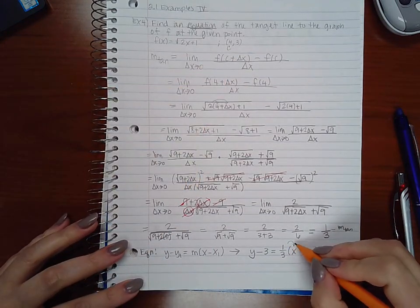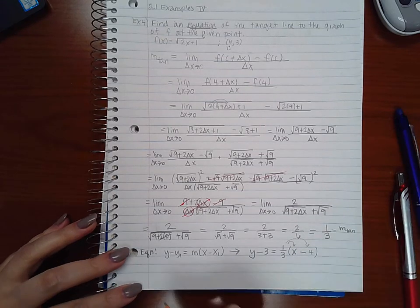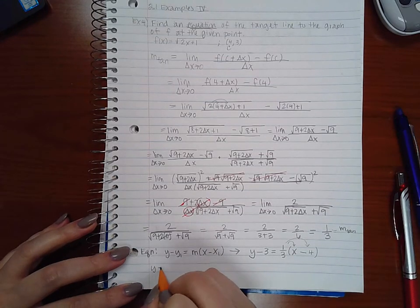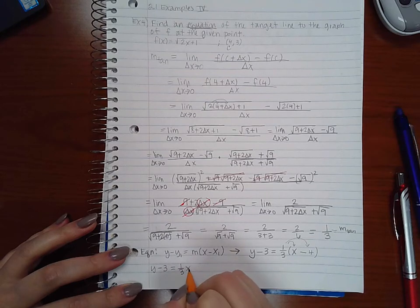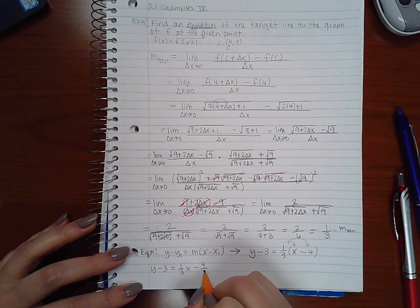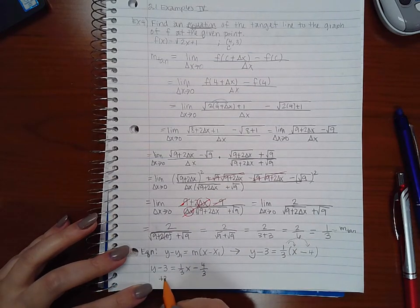So I have to distribute this. I will get y minus three equals one third x minus four thirds. And then if I add three to both sides, this will cancel here.